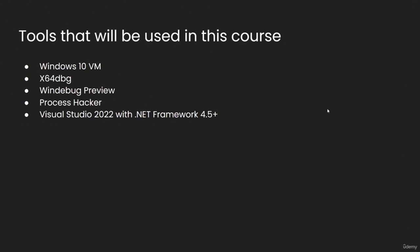Some of the tools I'll be using: first, a Windows 10 VM to develop, test, and run our executables, because I would never run stuff on my host machine. For debugging and looking at memory, we'll be using x64dbg, WinDbg, and Process Hacker. For our actual IDE, we'll be using Visual Studio 2022 with .NET Framework 4.5 or above. I personally use .NET Framework over .NET because .NET executables are kind of fat — .NET Framework stuff is smaller. The techniques you learn here should be portable to .NET with minor adjustment.